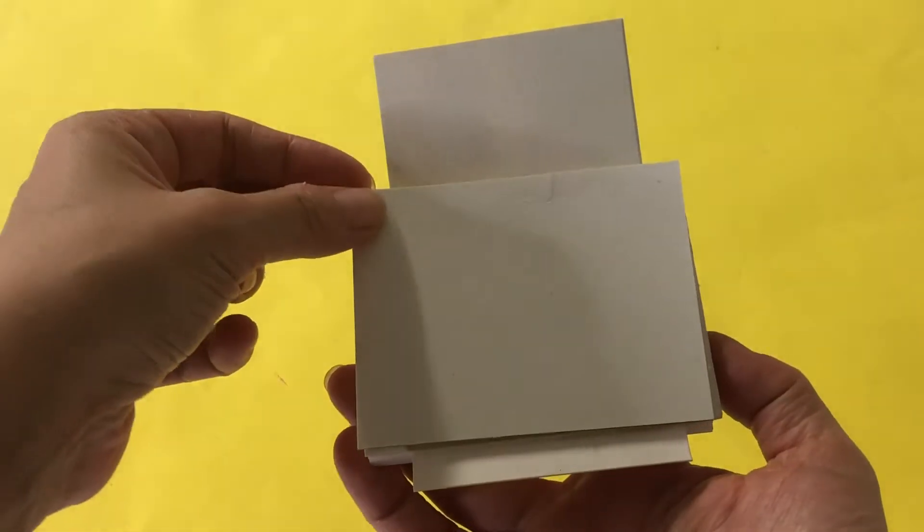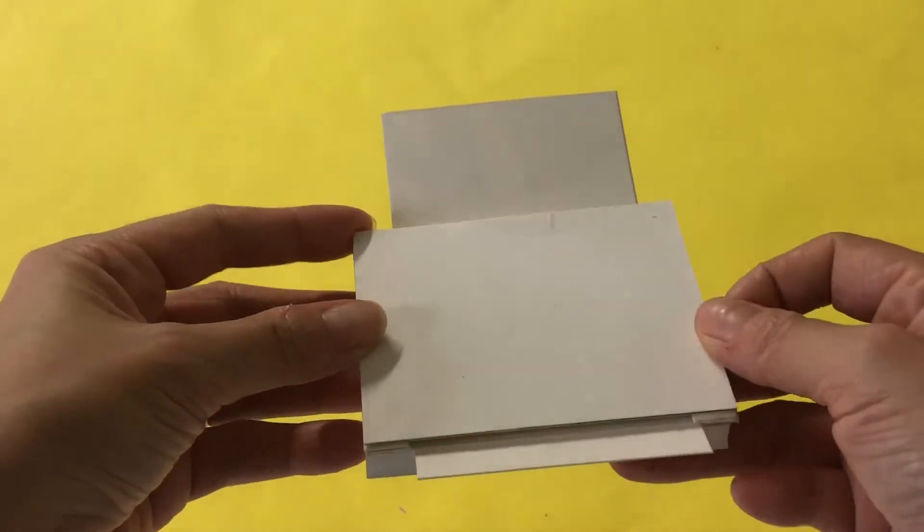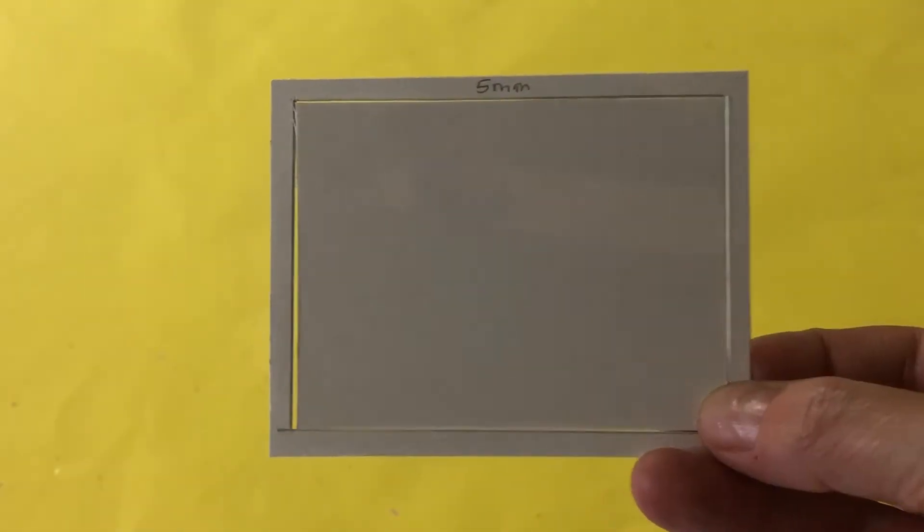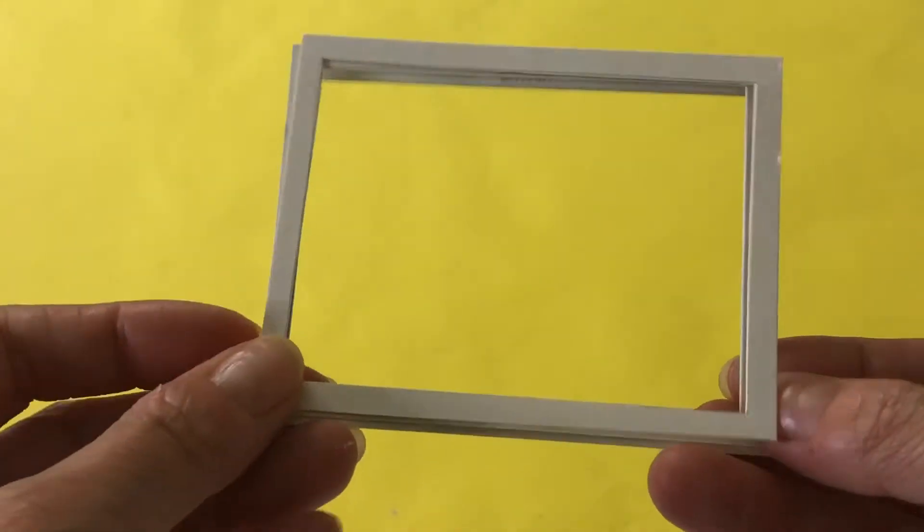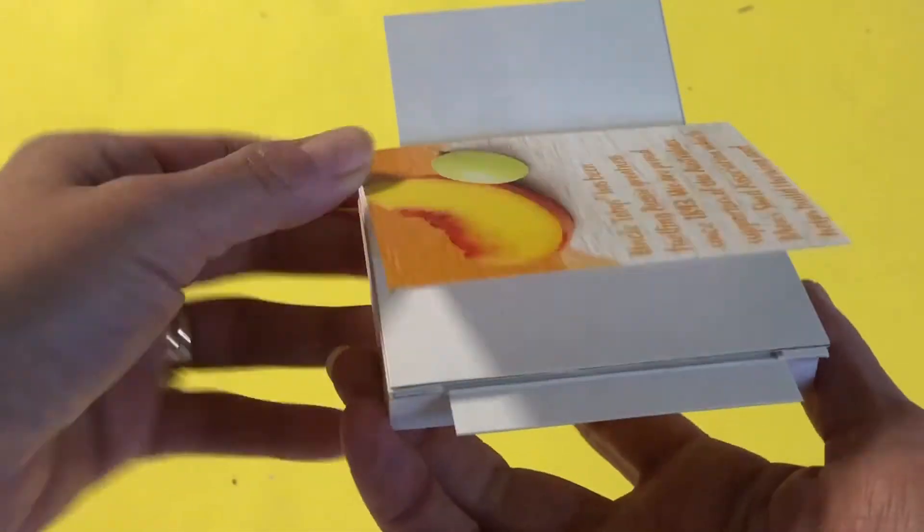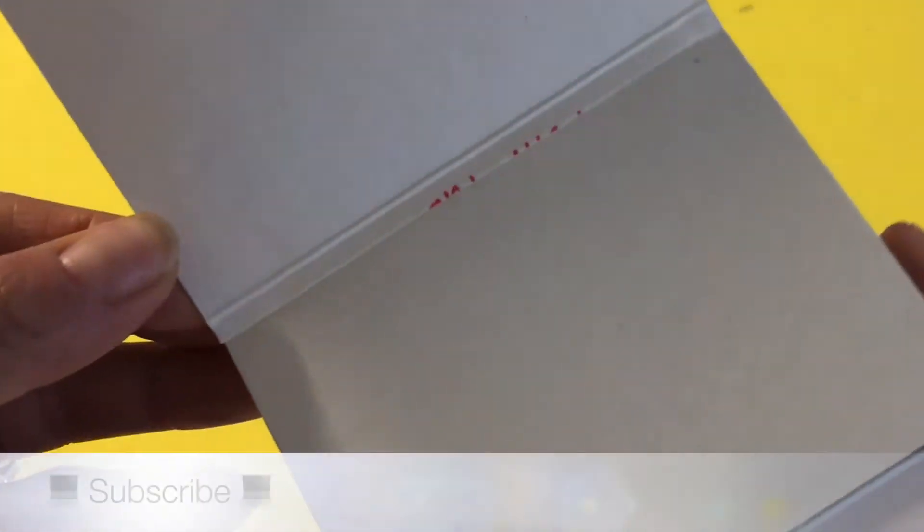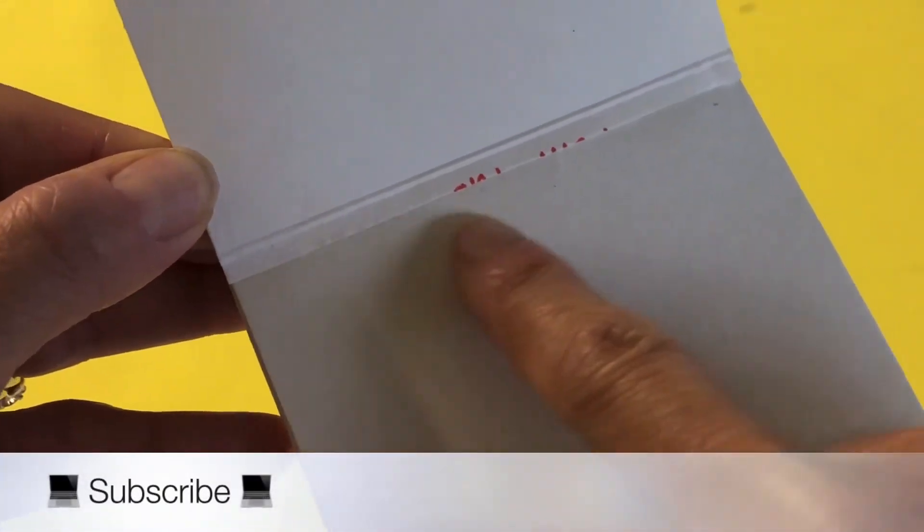To make the scanner frame, measure in five millimeters on all sides, then cut away the center. Repeat to make three. Stack and glue together, then paint black. Set aside while we attach the scanner lid. Cut another rectangle with a five millimeter tab. Glue the tab to the back of the printer. Now the lid lifts up and down.